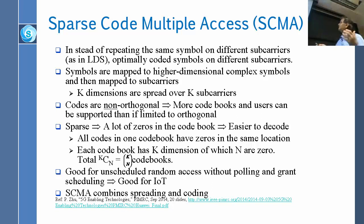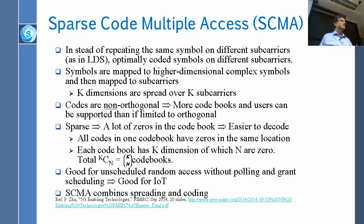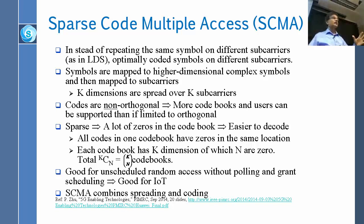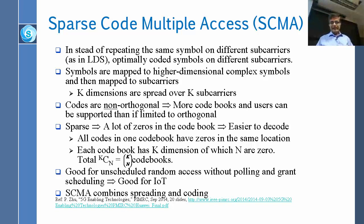In SCMA, symbols are mapped to higher-dimensional complex symbols and then mapped to subcarriers. Basically they go from two dimensions to four dimensions and back to two dimensions — difficult to explain simply without going into multi-dimensional mathematics. The key benefit is that the codes are non-orthogonal, so you don't have to select orthogonal codes. You have the full code space and more codebooks, and therefore you can support more users.